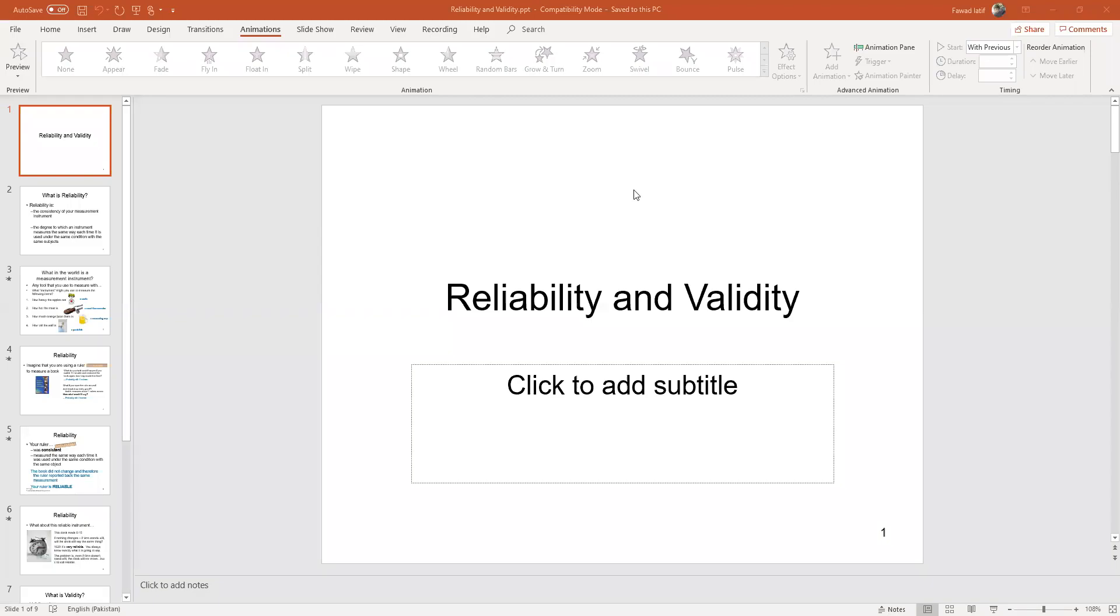Welcome. In our previous lecture, we built a basic model in SmartPLS and started discussing the measurement model in which we establish the reliability and validity of the constructs. There are other things as well which we'll discuss in coming lectures. Before going into detail as to how you assess the reliability and validity output in SmartPLS, it's worth noting that we should discuss what is reliability and what is validity and how these two are different from each other.